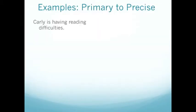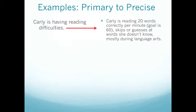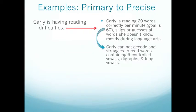Let's take a look at some primary examples. Carly's having reading difficulties — this statement doesn't lead us directly to any type of solutions. We need to make it much more precise. We can make it more precise by saying Carly is reading 20 words correctly per minute and we'd really like her to be reading 60. She skips or guesses at words she doesn't know, mostly during her language arts class. More specifically, Carly cannot decode — she struggles to read words, especially those containing R-controlled vowels, digraphs, and long vowels. With this level of precision, we can now move towards looking at solutions to help Carly reach success.